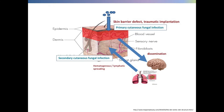Skin is the largest organ of the human body, and it can protect us from the attack of microorganisms from outside, including fungi. But in certain circumstances, they can get into the deeper part of the skin through breakdown of the skin barrier, such as traumatic implantation. So they establish infection in the deeper part of the skin — this is primary cutaneous fungal infection. And sometimes they can spread through the lymphatic or hematologic system to other organs and cause dissemination. Vice versa, the primary infection may originate from another organ and spread back to the skin — we call this secondary cutaneous fungal infection.